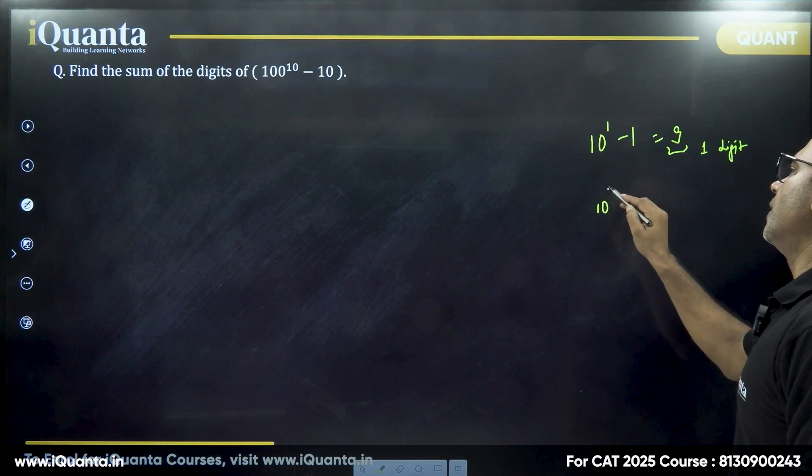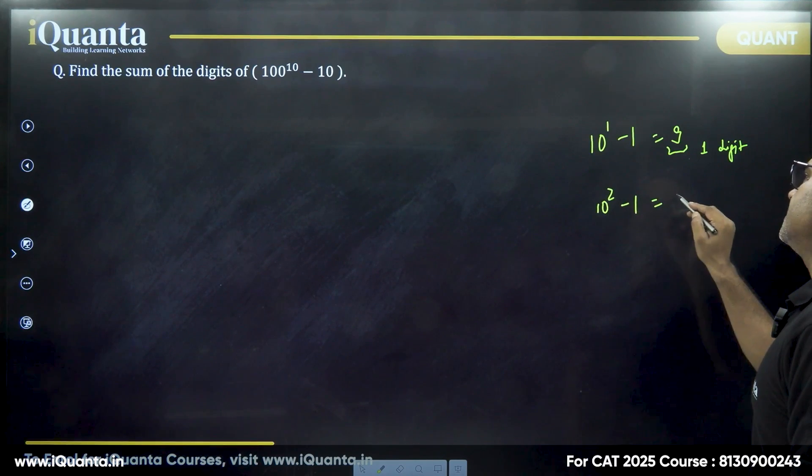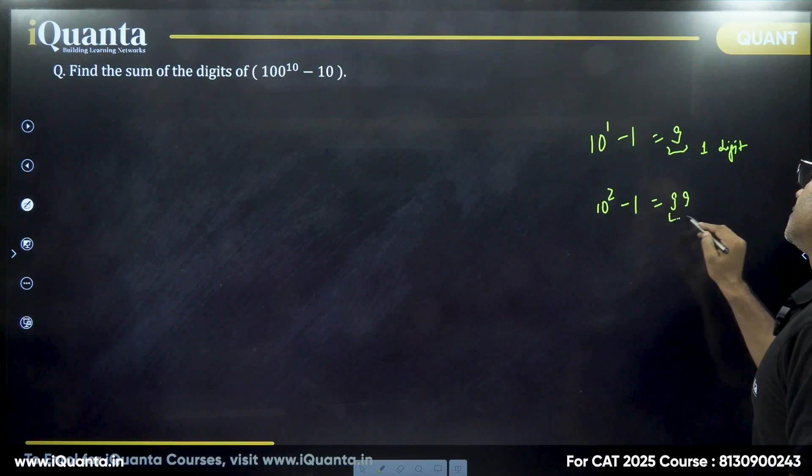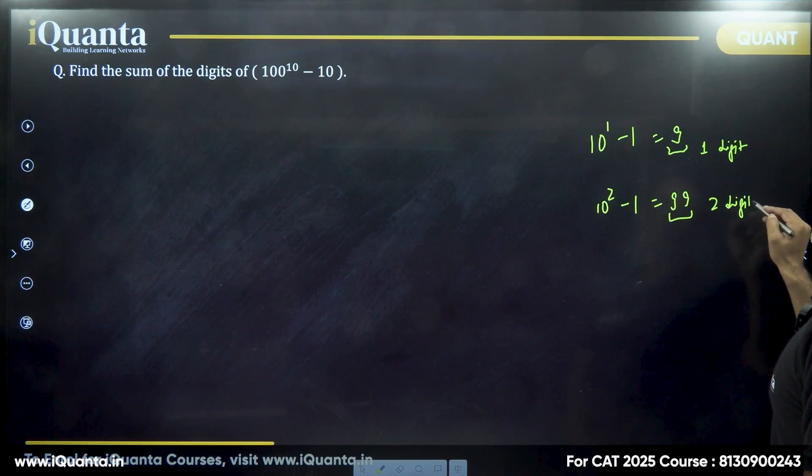Similarly, 10 squared minus 1, that is 100 minus 1, that is 99. So it is just two digits, and both of them are nines.